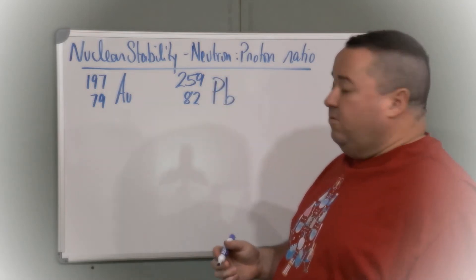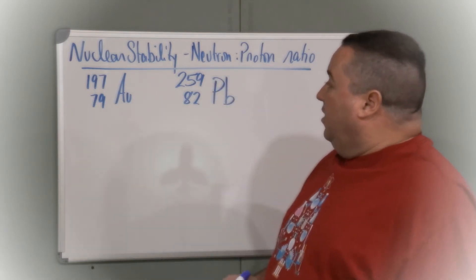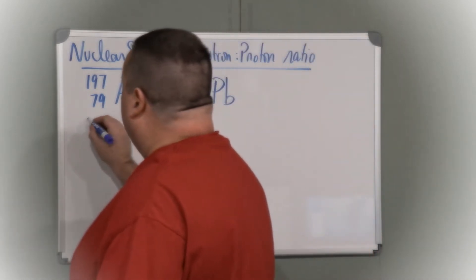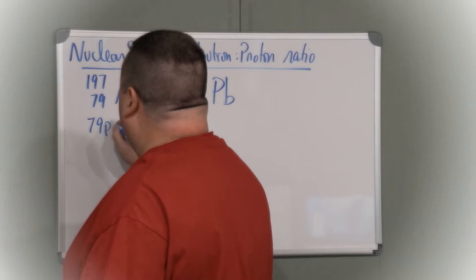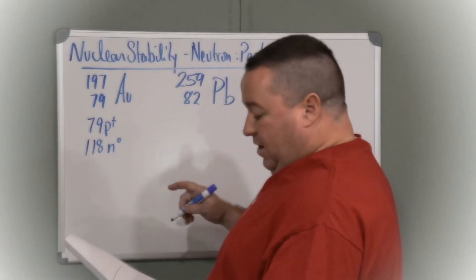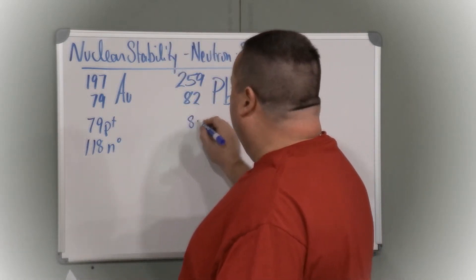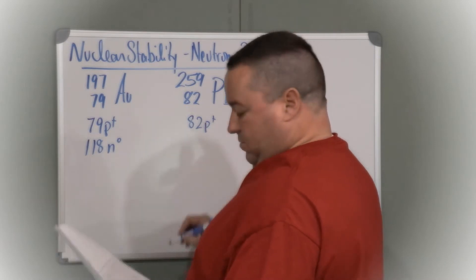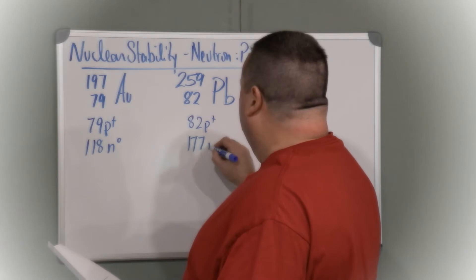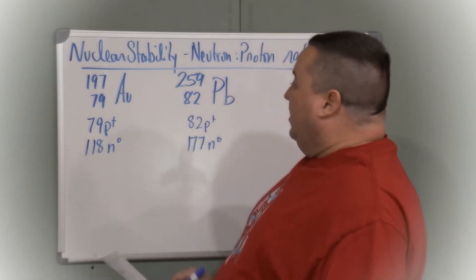A quick check on these two isotopes would show me that the gold has 79 protons and 118 neutrons, and that the lead 259 has 82 protons and 177 neutrons.